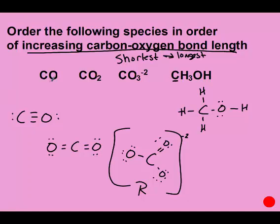So if we want to go from shortest, the shortest is a triple bond. Well, CO has a triple bond, so that's the shortest. Then we would go to a pure double bond. Well, this one only has double bonds, so that would be the next shortest.